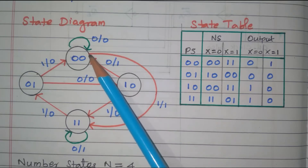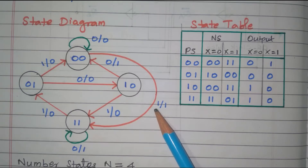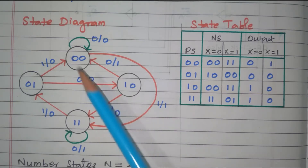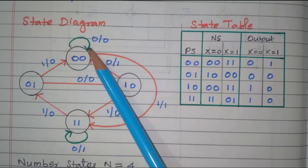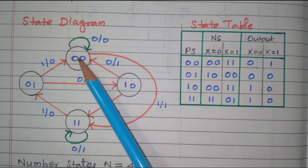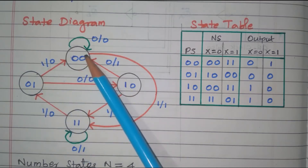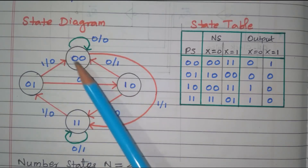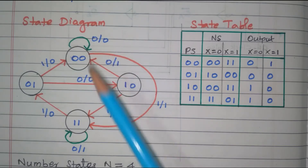The red color line indicates the state going from one state to another state — for that the first digit is the input and second digit is the output. The green color line indicates the state goes to the same state itself, meaning current state and next state are the same.